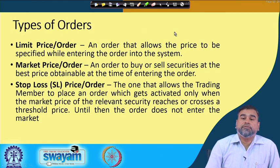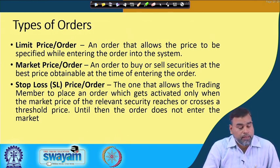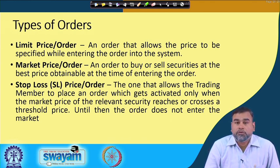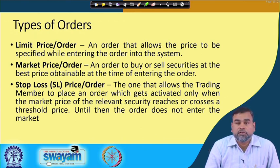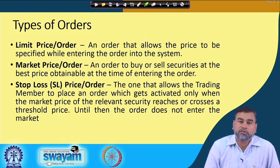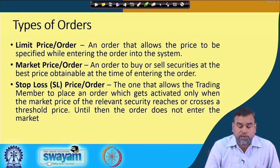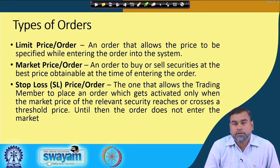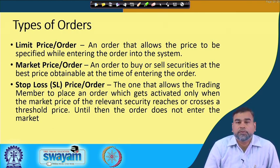Now let us see the different types of orders, since we have an order-driven market. We have a limit order, a market price order, and a stop-loss order. In a limit order, the investor specifies the price at which he or she wants to buy or sell the stock. The limit is already given, and once the stock price reaches that level the order will be executed. For example, if you say you want to buy at Rs. 50, the order will automatically execute once the price reaches 50.